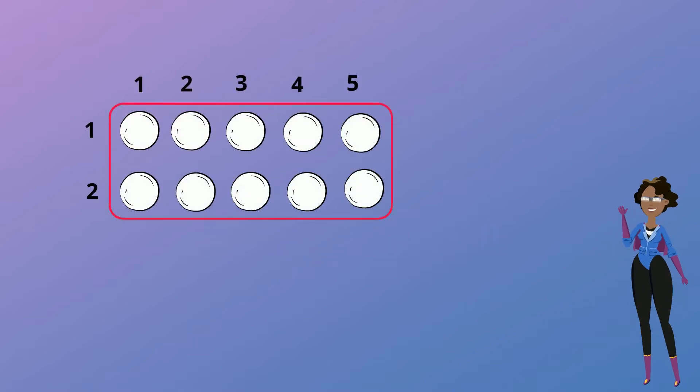When using arrays you can write the multiplication number sentence by counting the number down and then across. Counting all the items together will give us the answer to the multiplication sentence.